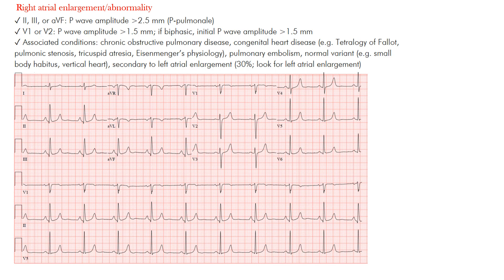First we're going to look at right atrial enlargement or abnormality. This is a finding associated with many conditions, and what we want to do is be able to recognize it on the EKG. You want to focus on a few leads — the leads we focus on when looking for atrial abnormalities are mainly lead 2 and V1.